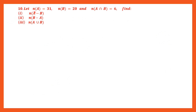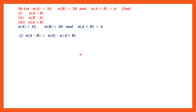Question 10: the cardinal number of A is 31, B is 20, and A intersection B is 6. We have to find three answers. First, the cardinal number of A minus B. Using the formula: cardinal number of A minus cardinal number of A intersection B. Substituting: 31 minus 6 is 25. We have found the cardinal number of A minus B, and that is 25.